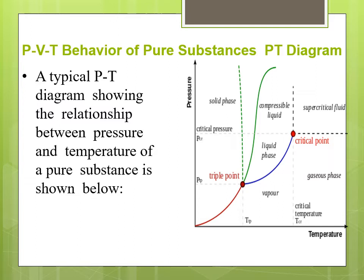In this diagram, you can see two points: one is the triple point and another one is the critical point. There is also a dotted line. The green line indicates the fusion line, the red line indicates the sublimation line, and the blue line indicates the vaporization line. You can see the solid phase, the liquid phase at the bottom, the vapor, and also the gaseous phase.